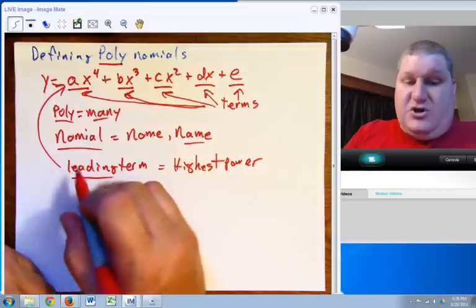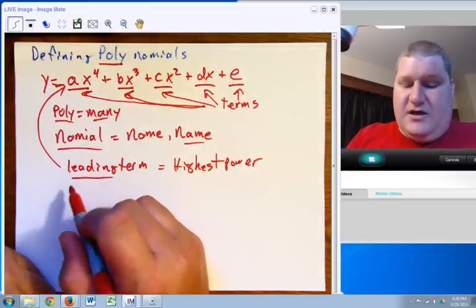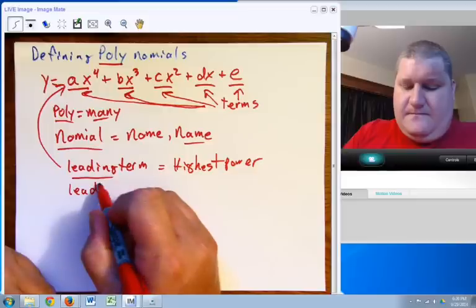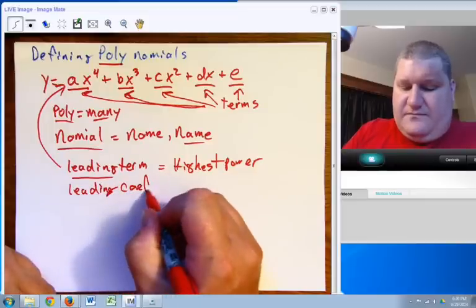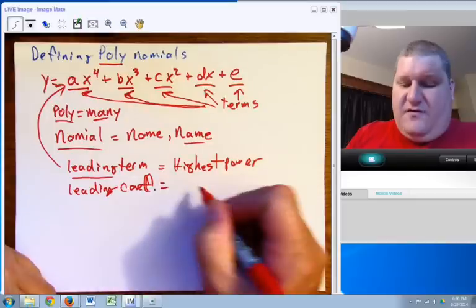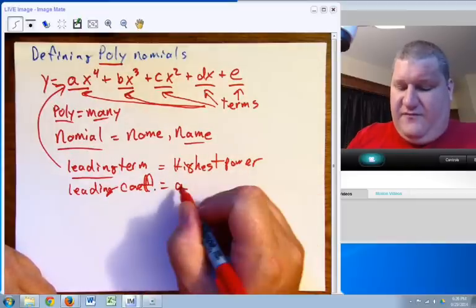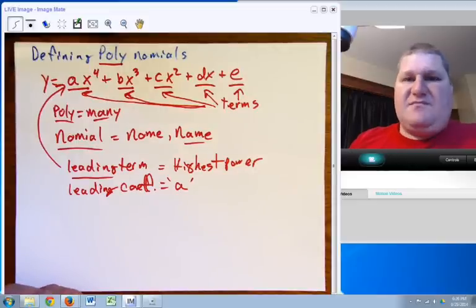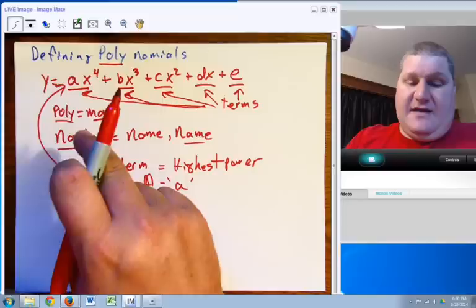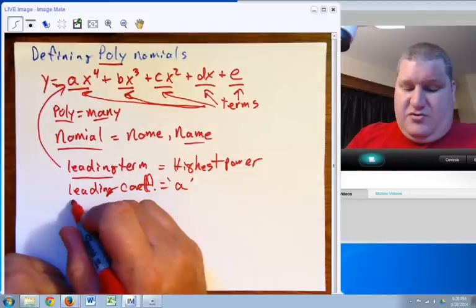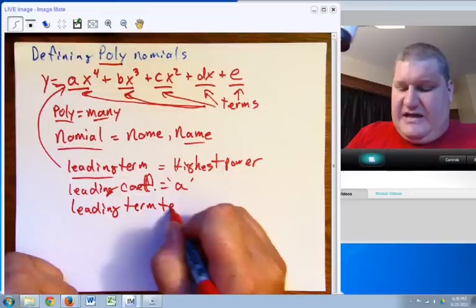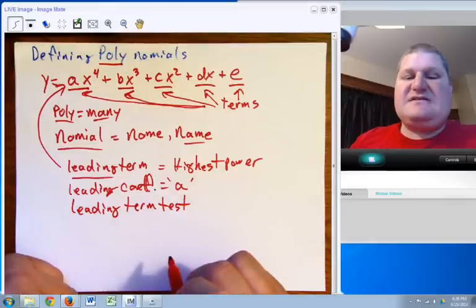So leading term equals highest power. Now, a leading term has, of course, a couple key pieces. One of the first things we're going to have is a leading coefficient. A leading coefficient would, in this case, be a. In fact, it's always a because whatever it is, whatever the power is, the a is going to be listed first. And so if you have a leading term of a, you're also going to be able to do a leading term test.